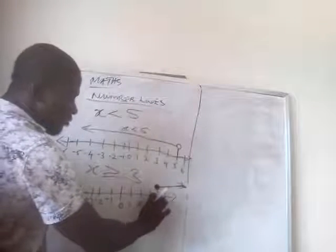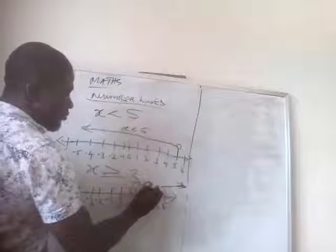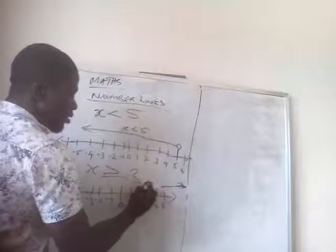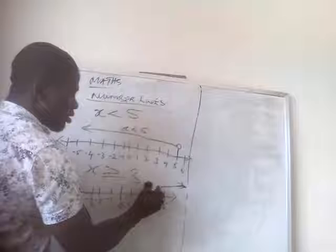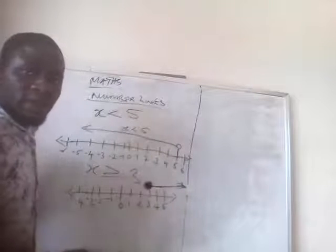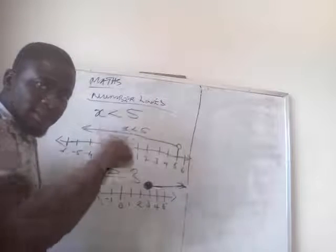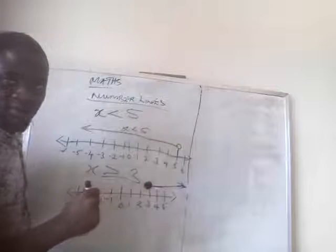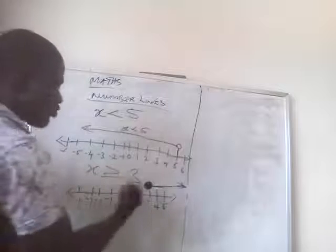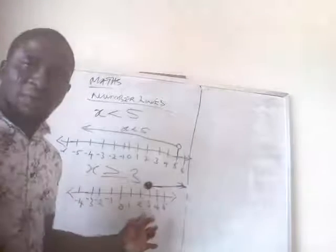All these numbers, sorry, I started from 4, set 3. So 3 is inclusive. X is greater than 3. It's inclusive. So that's equal to. This is how number line goes.